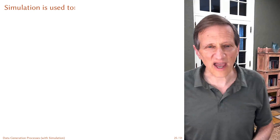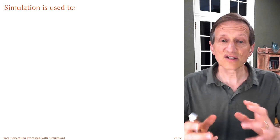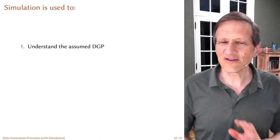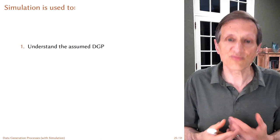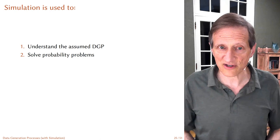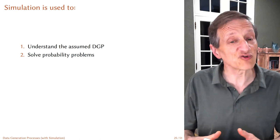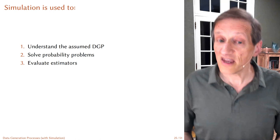To analyze data generation processes we're going to use statistical simulation — a terrific tool used for quite a number of things. First, it's used to understand an assumed data generation process. If somebody tells you how data were generated, it's very helpful to simulate data from that assumed model, look at the results, get a feel for it, and see whether it has the properties you expect. Second, simulation is really good for solving probability problems — complicated problems from earlier courses where you'd have to make tricky calculations.